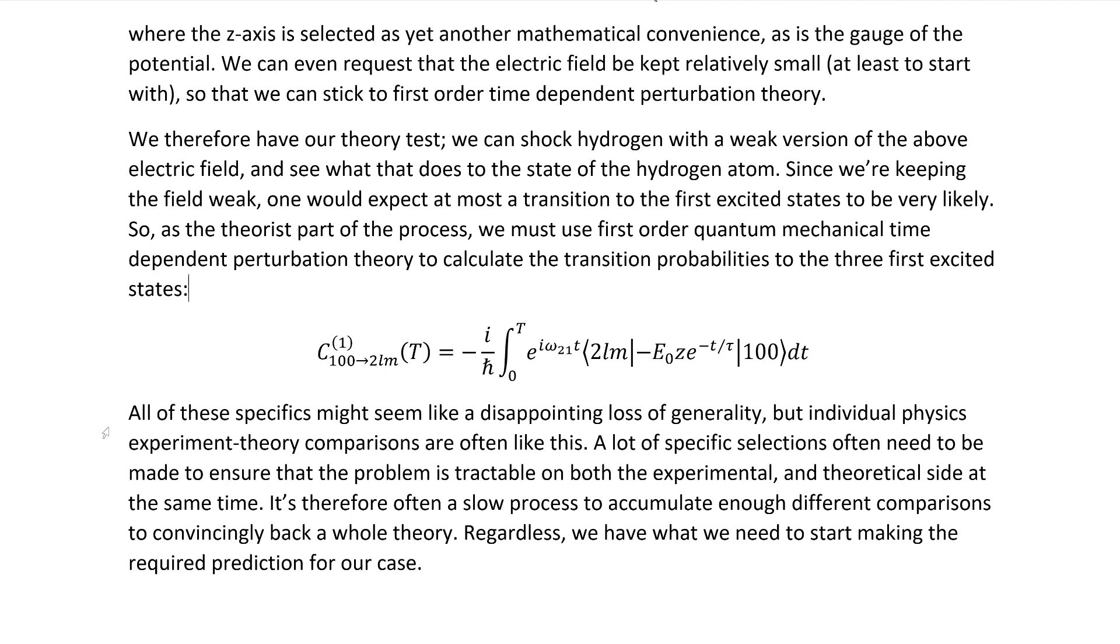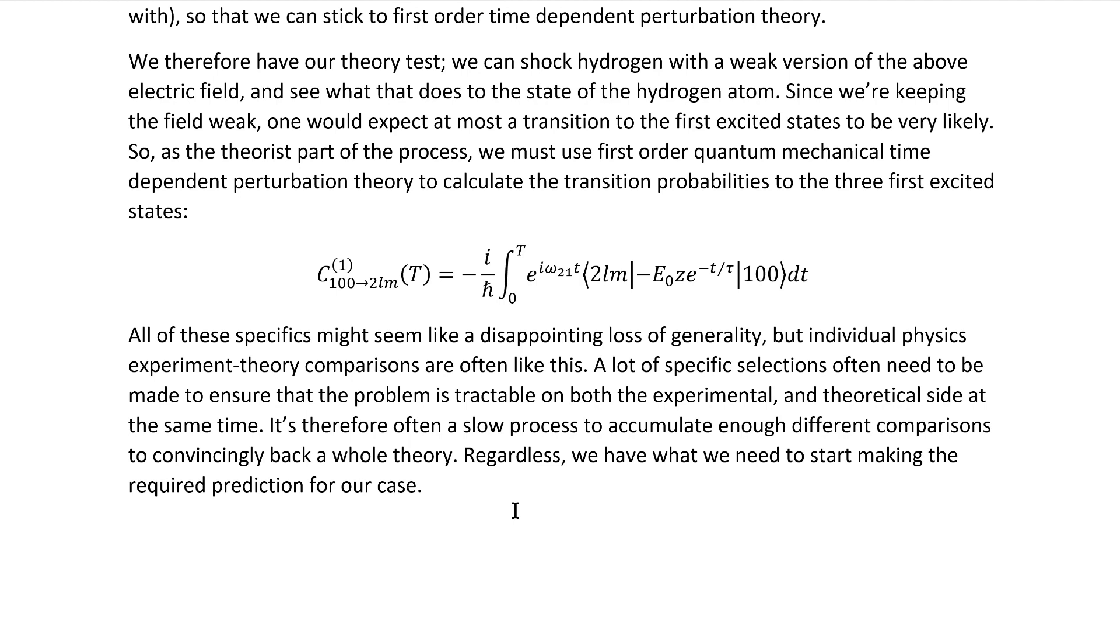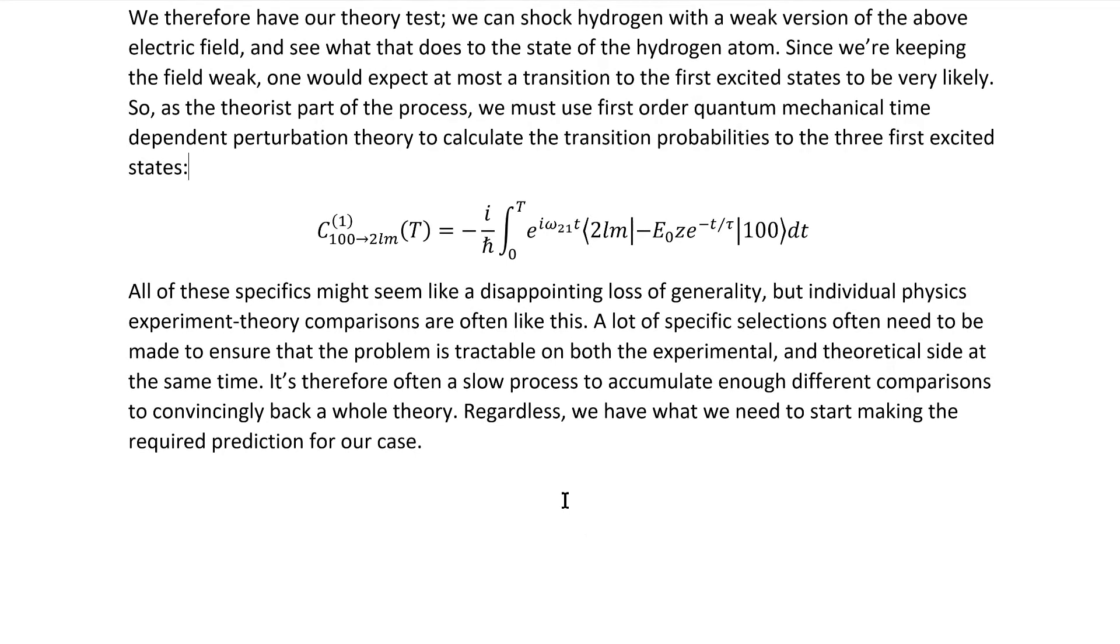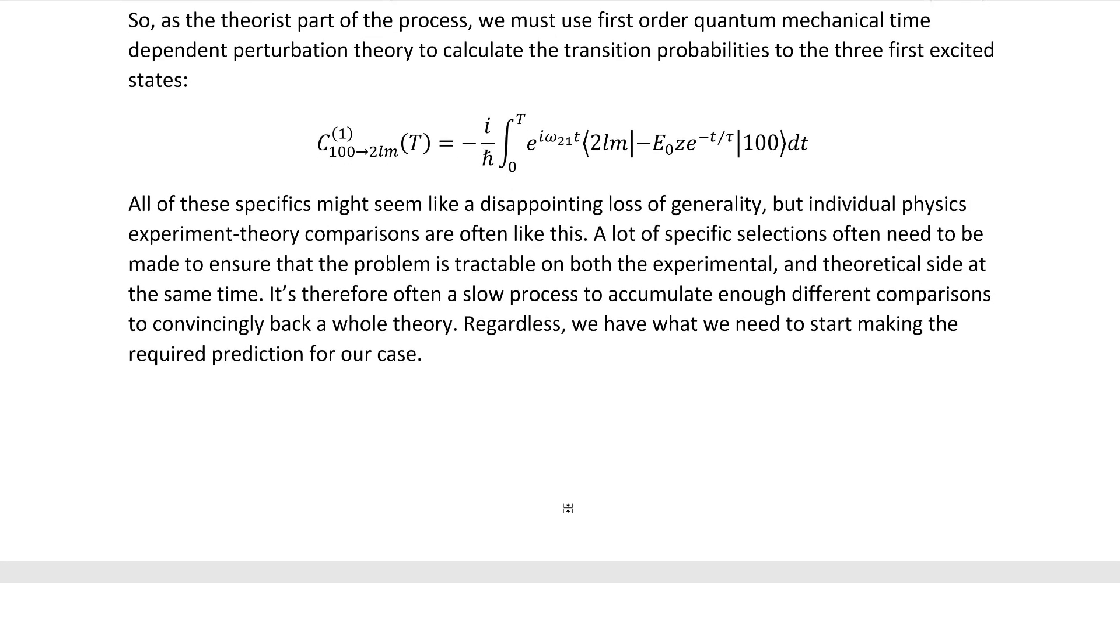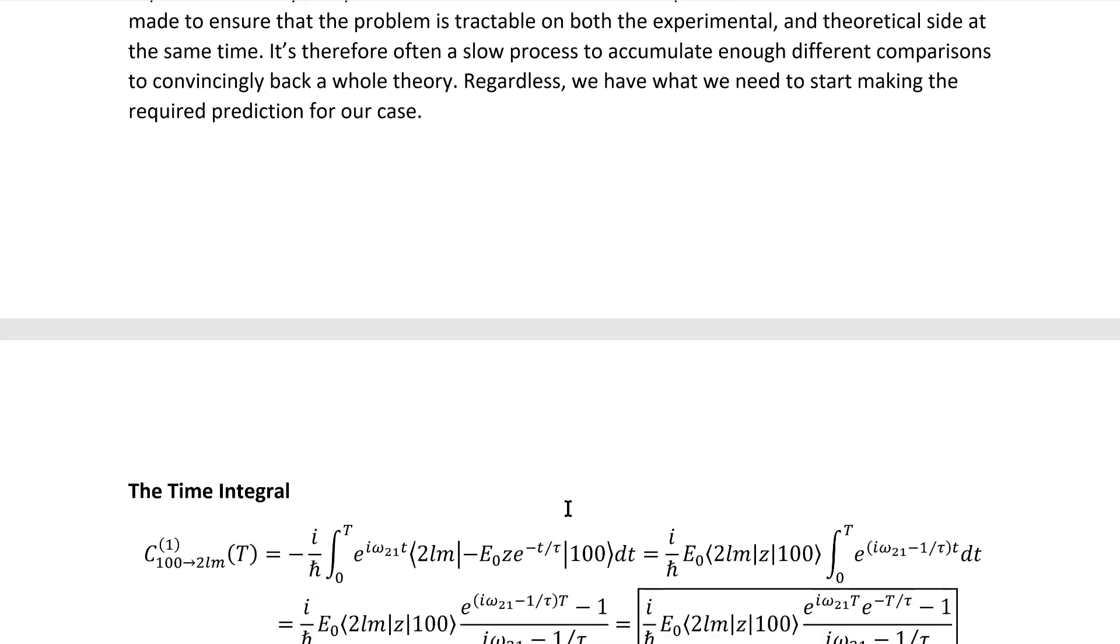Individual experiment theory comparisons in physics are often like this. A lot of specific selections often need to be made to ensure that the problem is tractable on both the experimental and the theoretical side at the same time, especially when you're in the early stages of testing a theory. A byproduct of this, of course, is that it's often a very slow process to accumulate enough different comparisons to convincingly back a whole theory. However, regardless of that, the important thing is that we do actually now have what we need to start actually doing the theoretical calculation.